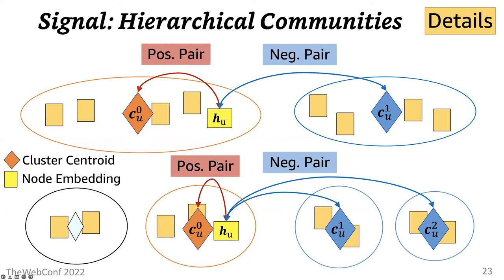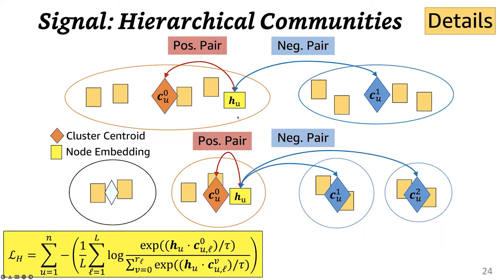Then the next set of positive and negative pairs can be constructed by considering another level of clustering, for instance, this example shown at the bottom. Given these sets of positive and negative pairs, contrastively learning based on hierarchical communities can be performed by this loss function.